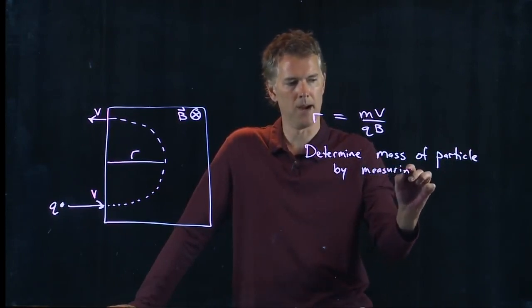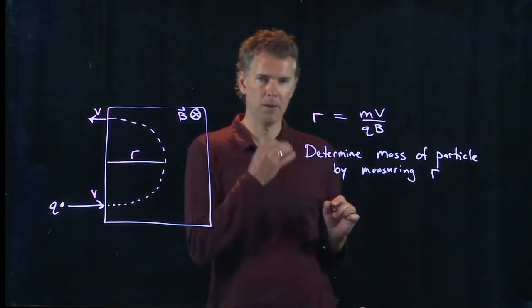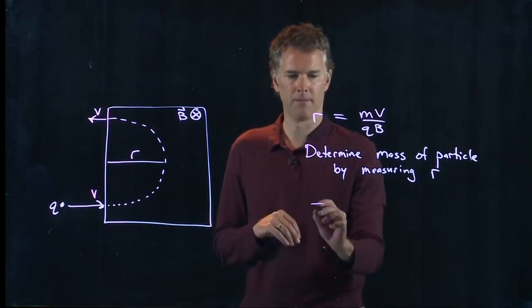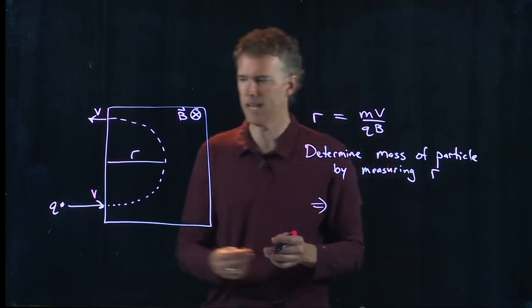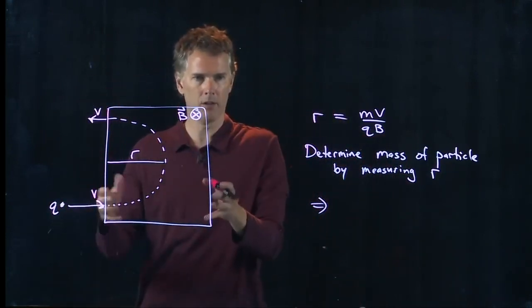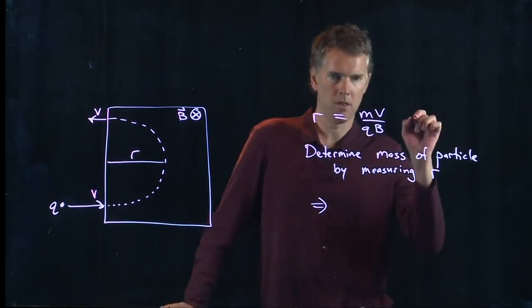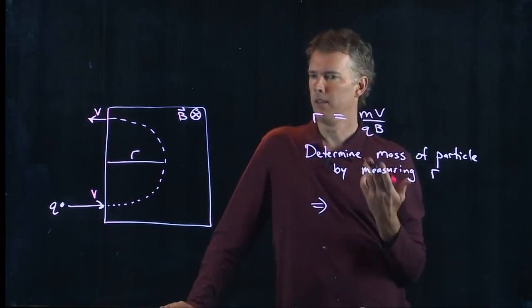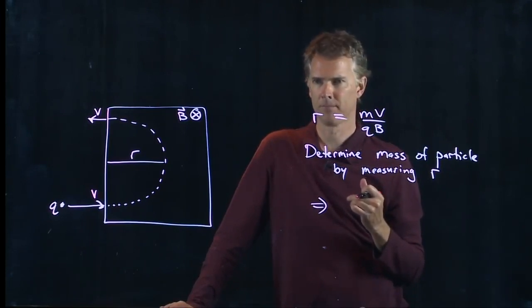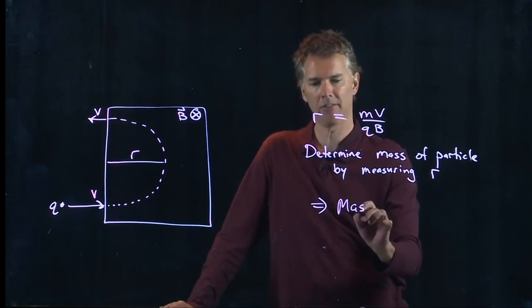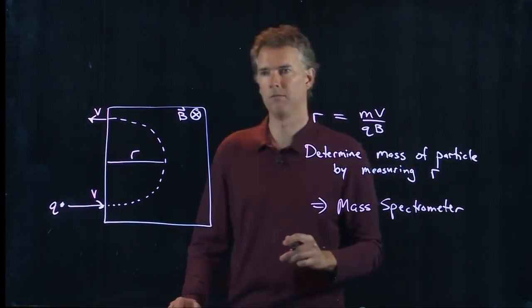I can determine the mass by measuring that radius of curvature. Anybody know what this device is called? We have one of these here on campus. It shoots particles into this region of magnetic field and it measures the radius of curvature of their trajectory, and from that we determine the mass of the particle. This is a mass spectrometer.